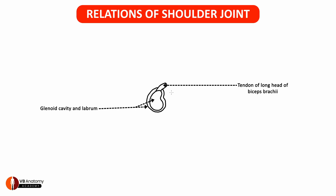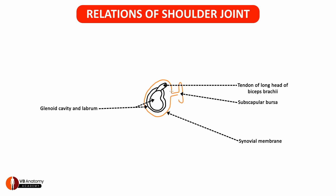Surrounding all this is the synovial membrane. The synovial membrane emerges out of the joint to form the subscapular bursa. Surrounding this is the capsule of the shoulder joint.